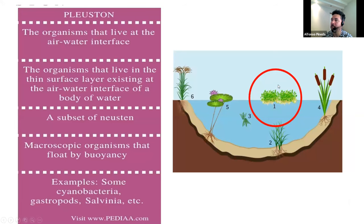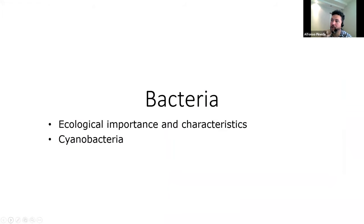And finally, this community — the pleuston — refers to the organisms that live at the air-water interface, like macrophytes floating at the surface of the water column. We can also find in this region some microorganisms like cyanobacteria, and even animals like gastropods.